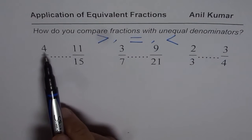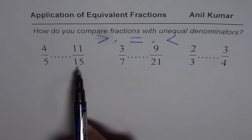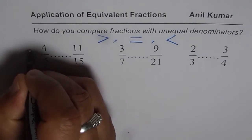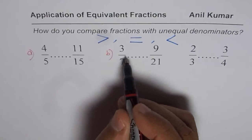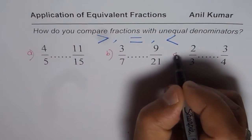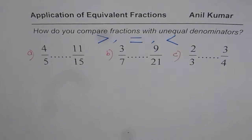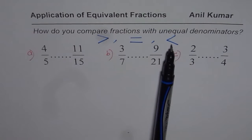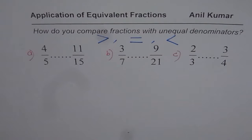We need to compare 4 over 5 and 11 over 15 — that is question A. Question B is to compare 3 over 7 with 9 over 21, and C is 2 over 3 and 3 over 4. You can pause the video, write down equivalent fractions and then compare. Once you have compared, put in the symbols — greater than, equal to, or less than — and then check with my solution.